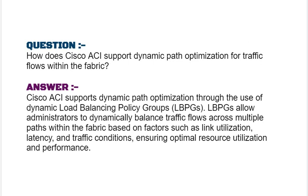Our next interview question is: how does Cisco ACI support dynamic path optimization for traffic flows within the fabric? Your answer should be: Cisco ACI supports dynamic path optimization through the use of dynamic load balancing policy groups, LBPGs. LBPGs allow administrators to dynamically balance traffic flows across multiple paths within the fabric based on factors such as link utilization, latency, and traffic conditions, ensuring optimal resource utilization and performance.